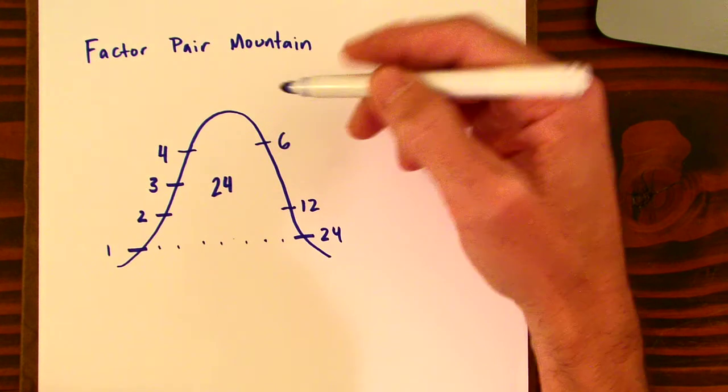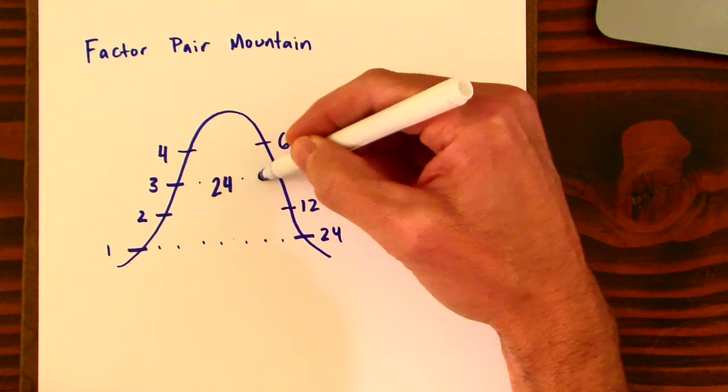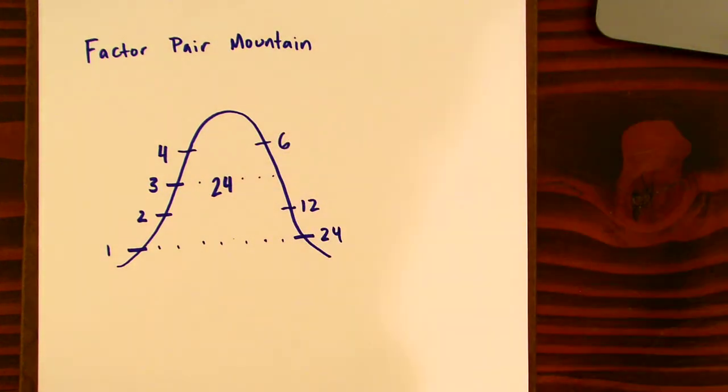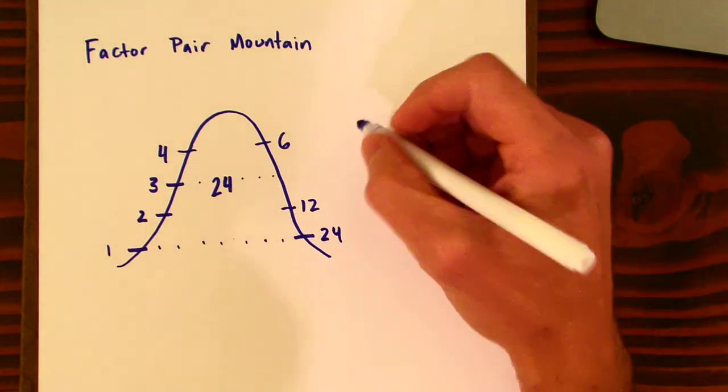So in this case, if we were looking for what went with three, now we could search intentionally. We could say, okay, 24 divided by three is, and we might even do something kind of fancy like this.